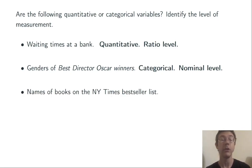Names of books on the New York Times bestseller list. Because they're names, this is going to be categorical. And in this case, they can be ordered: the first bestseller, the second bestseller, the third bestseller. In a natural way, they can be ordered. So categorical, ordinal level of measurement.